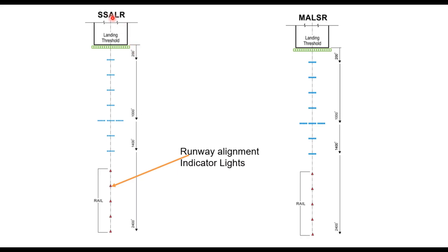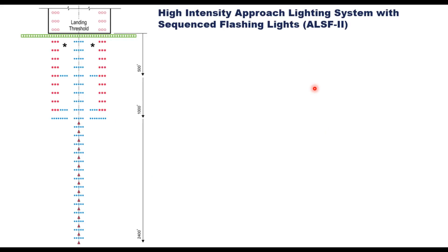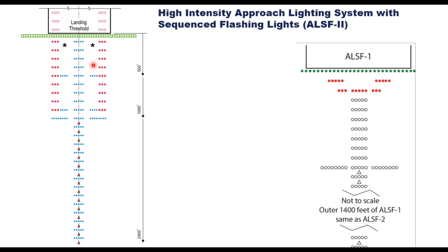SSALR and MALSR are essentially the same, with the only difference being that SSALR uses 300-watt bulbs and MALSR uses 150-watt bulbs. When comparing the high intensity approach light system with sequenced flashing lights, ALSF-1 and ALSF-2, the difference lies within 300 meters from the runway threshold, where they have different lighting systems.